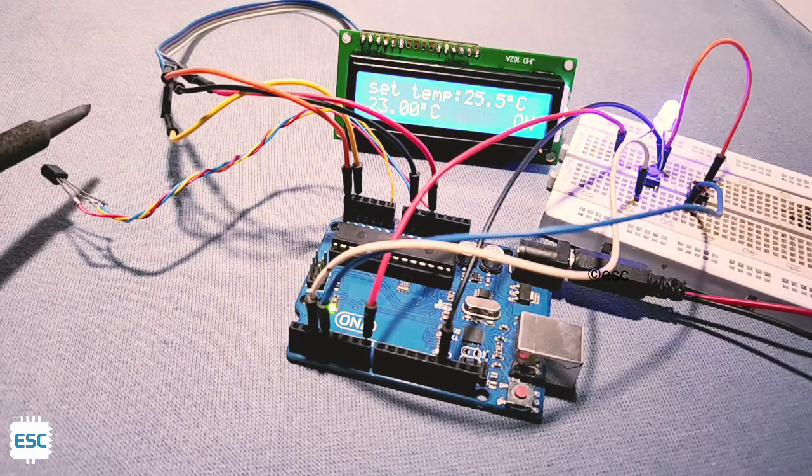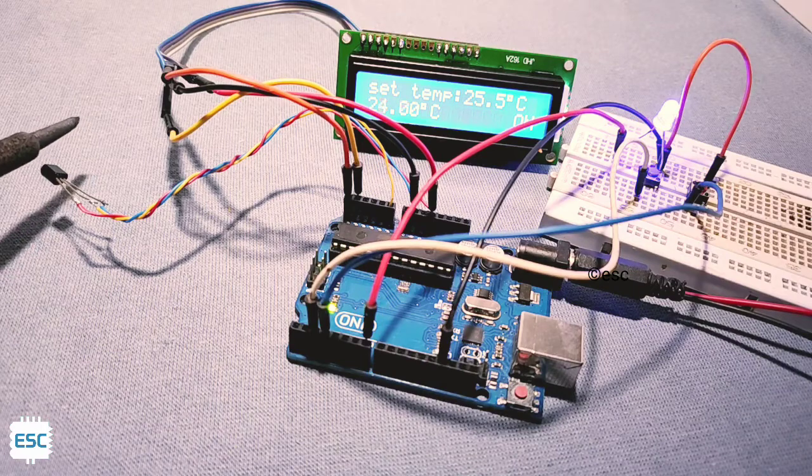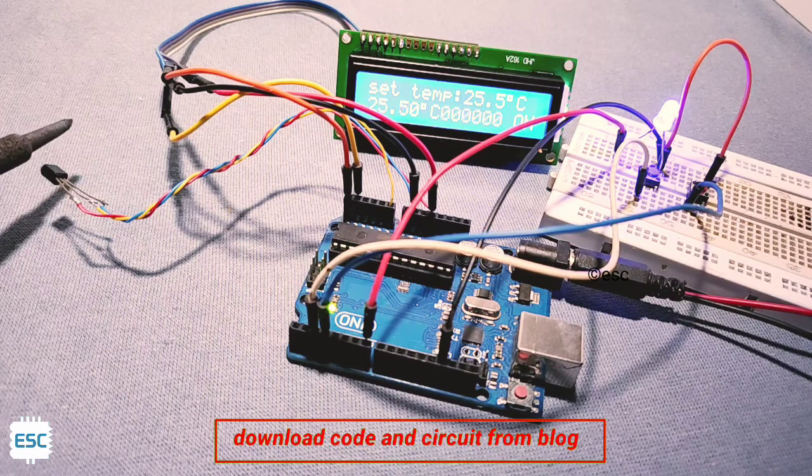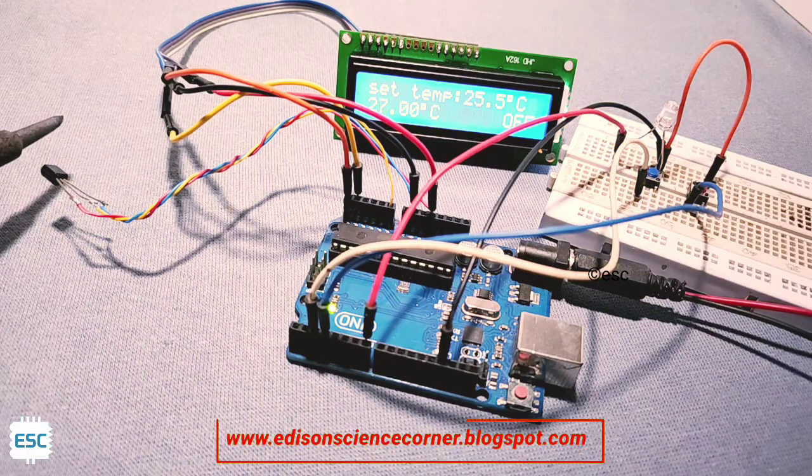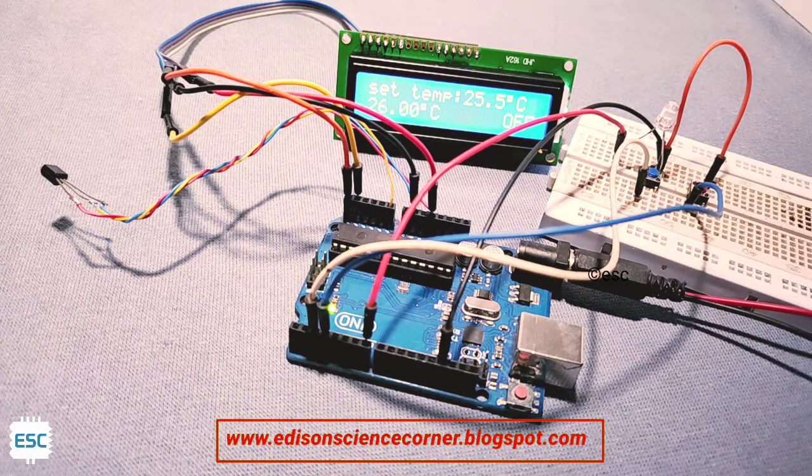Now I am heating up the sensor with soldering iron. And the temperature is rising. And when the temperature reaches 25.5 degrees Celsius the output goes low. So the circuit is working.